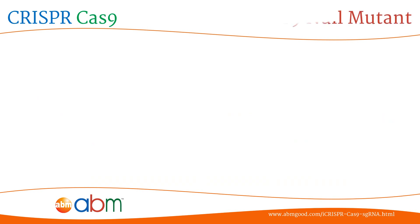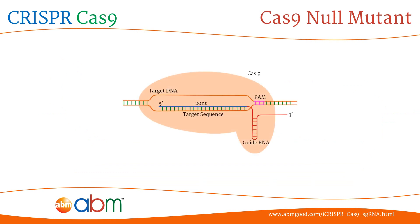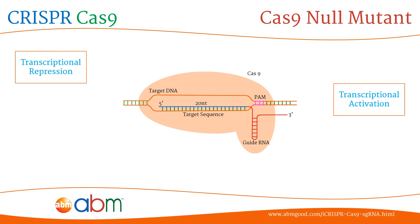While the Cas9 null mutant does not introduce indel mutations or directed recombination to the target genome, it offers great potential in genome targeting and can be used for the following. First, transcriptional activation, by fusing the Cas9 null mutant with a transcriptional activator such as VP64. Second, transcriptional repression, done by the fusion of the Cas9 null mutant with a transcriptional repressor, or using a gRNA against a promoter region of the desired gene.